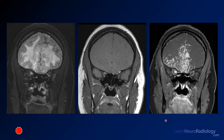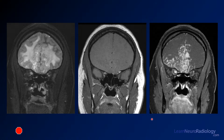Just a couple more images in the coronal plane. Here you see a T2 with fat saturation, a T1 pre-contrast, and a T1 post-contrast. So you're getting the orbital apex here.